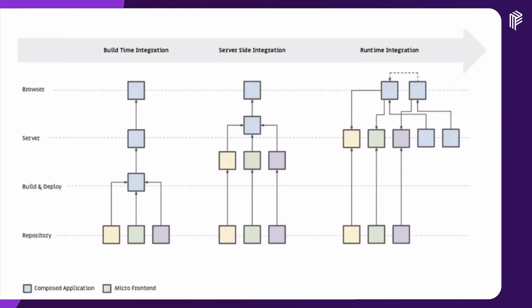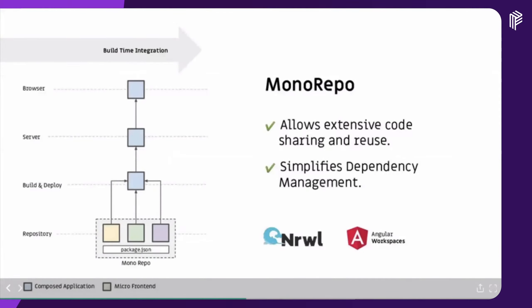Here you see another view: build-time integration. In the blue box, you see the build-deploy step. Micro frontends are packaged as dependencies and bundled together via a package.json. Server-side integration is responsible for composing and rendering HTML on the server. Runtime integration is done entirely in the frontend — we don't use a package.json at runtime integration. I'll show you an example later.